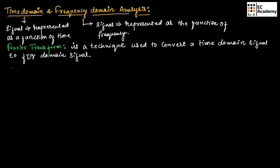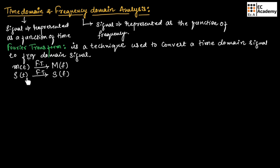For example, if we take a signal M of T and perform Fourier transform, we will obtain capital M of F. Similarly, if we take a signal S of T and perform Fourier transform, we will obtain capital S of F. So M of T is the message signal in time domain, M of F is the message signal in frequency domain. In the same way, S of T is the modulated signal in time domain, and capital S of F is the modulated signal in frequency domain.